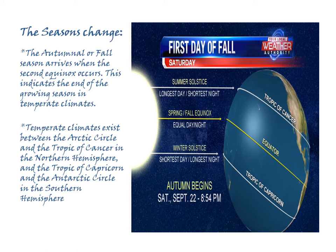The autumnal or fall season arrives when the second equinox of the year occurs, indicating the end of the growing season in temperate climates. Temperate climates exist between the Arctic Circle and the Tropic of Cancer in the Northern Hemisphere, and between the Tropic of Capricorn and the Antarctic Circle in the Southern Hemisphere. The tropical regions are defined as being between the two tropics. The four-season system exists only in the temperate zones; the tropics have two seasons — wet and dry.